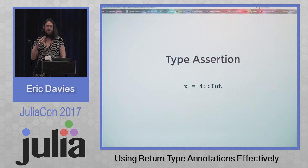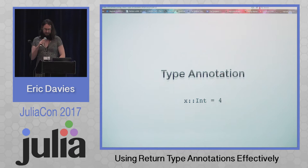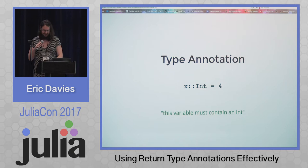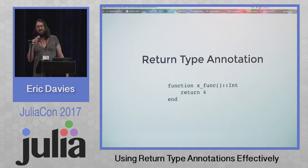Everyone's probably seen a type assertion before — this is saying this value must be an int or throw an error. Many of you will see this sort of type annotation on a variable, which indicates to the compiler that this variable has to contain an int. If you try to put something else in it, throw an error. And then this is a return type annotation. In this situation, the type annotation is saying this method has to return an int — convert it, make sure it's an int, or throw an error.